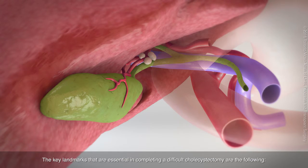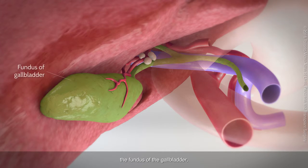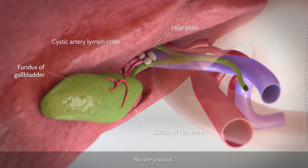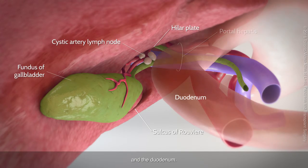The key landmarks that are essential in completing a difficult cholecystectomy are the following: the fundus of the gallbladder, the Hilar plate, the cystic artery lymph node, Ruvier's sulcus, the porta hepatis, and the duodenum.